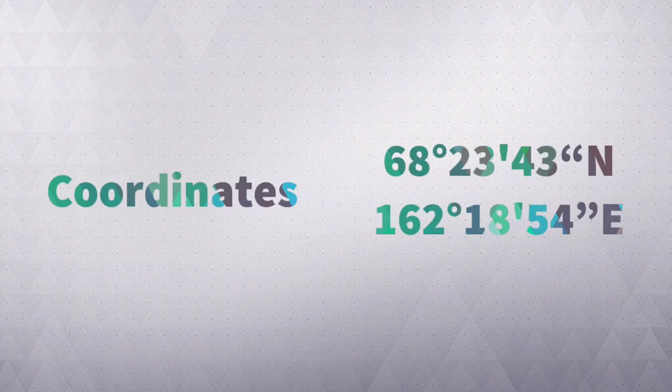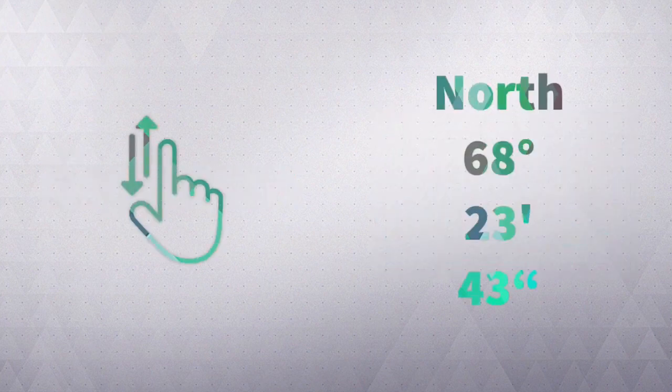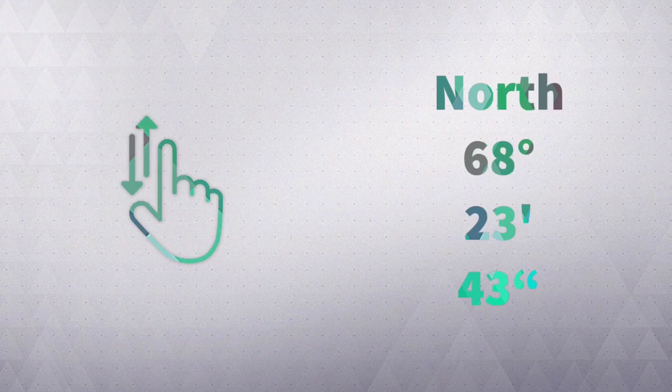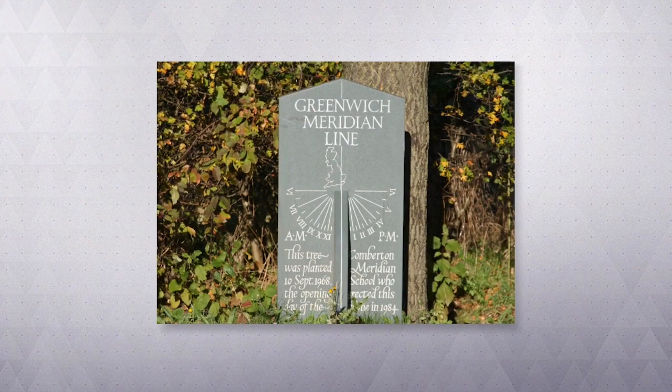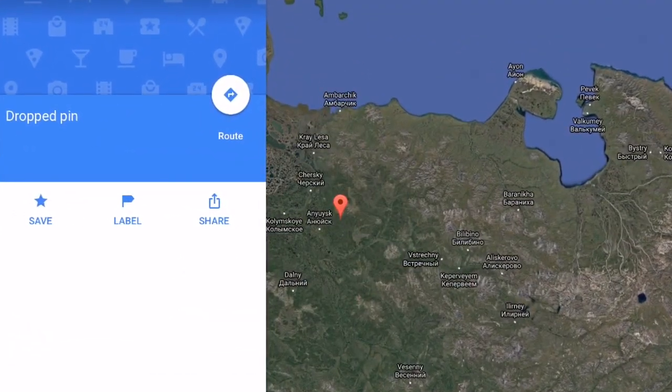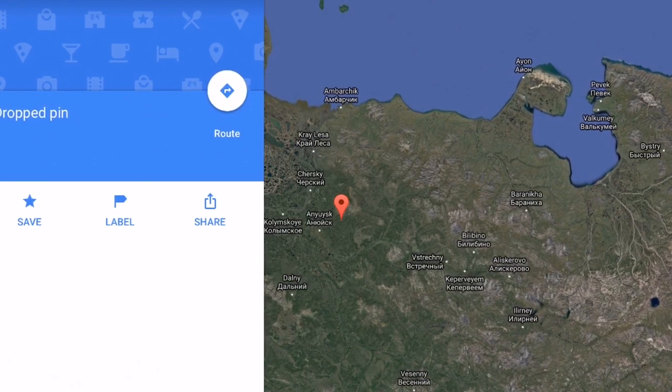So let's say we saw some coordinates: 68 degrees, 23 minutes, 43 seconds north, 162 degrees, 18 minutes and 54 seconds east. Well, we'd start at the equator. Then we'd travel north. We'd go to 68 degrees, stop. Then 23 minutes, stop. Then 43 seconds. Then we'd jump to that Greenwich Meridian line. Travel 162 degrees east. Then 18 minutes further on and finally 54 seconds. And we'd end up in a delightful wooded area just northeast of Agniosk. Good times.